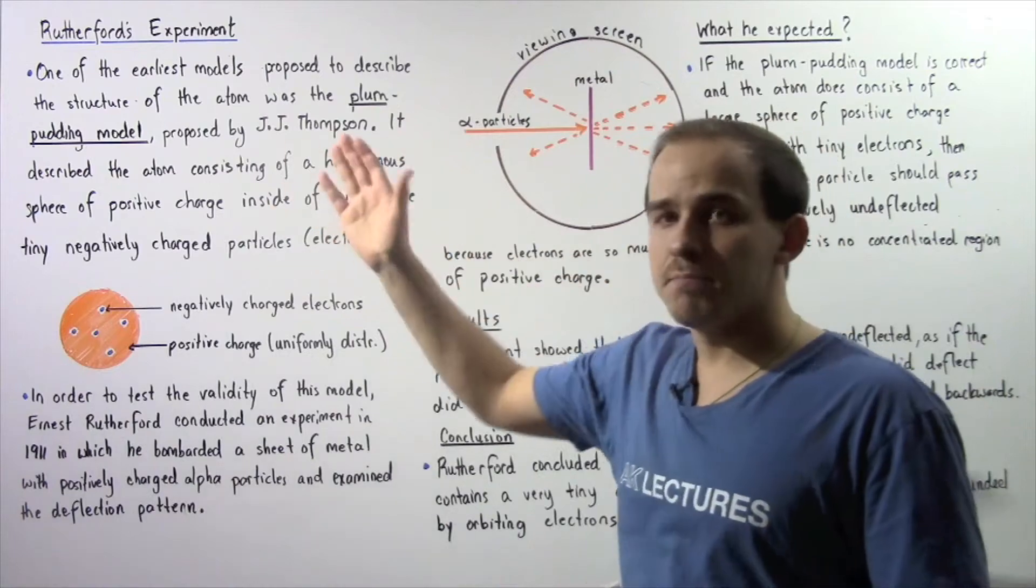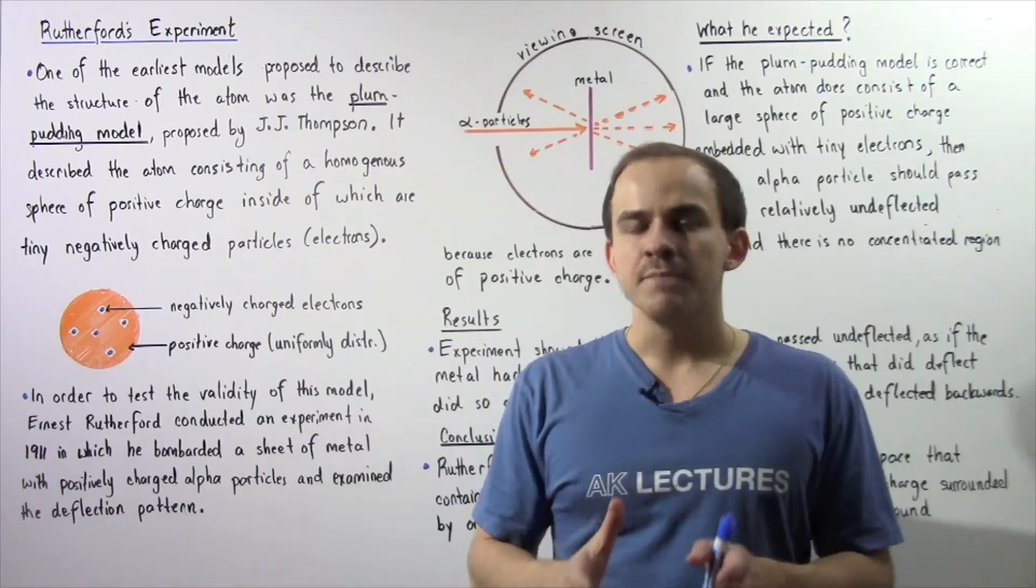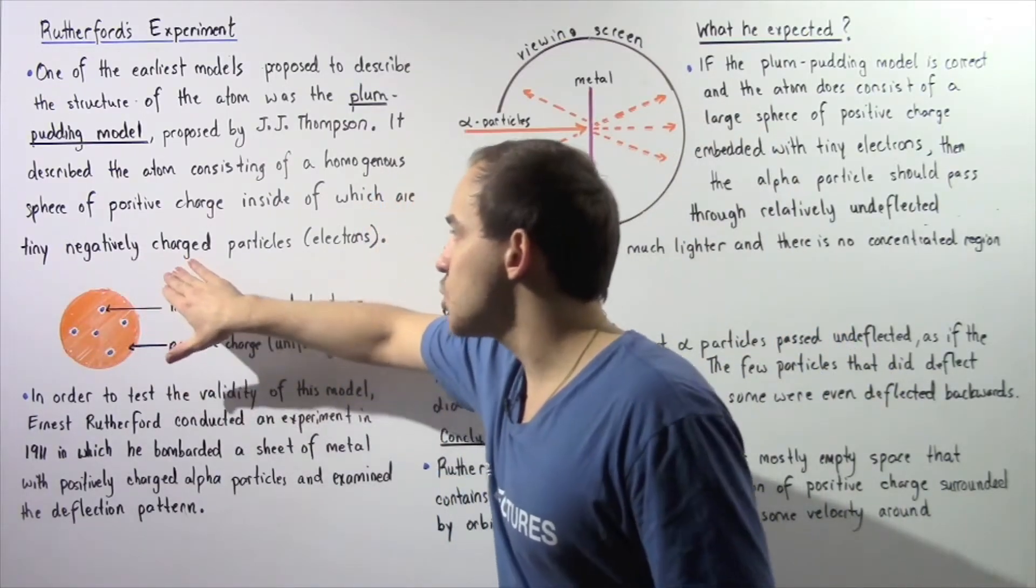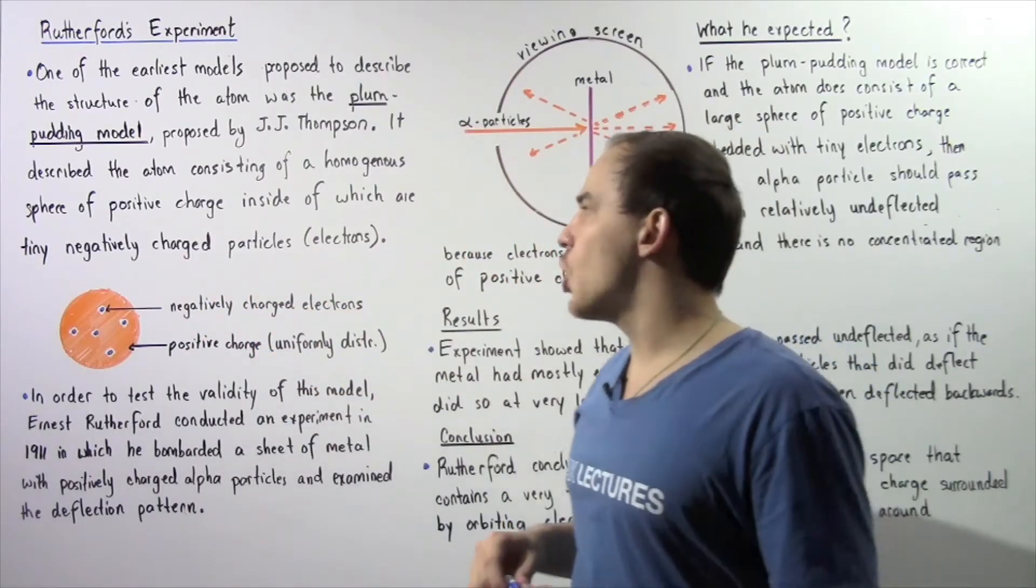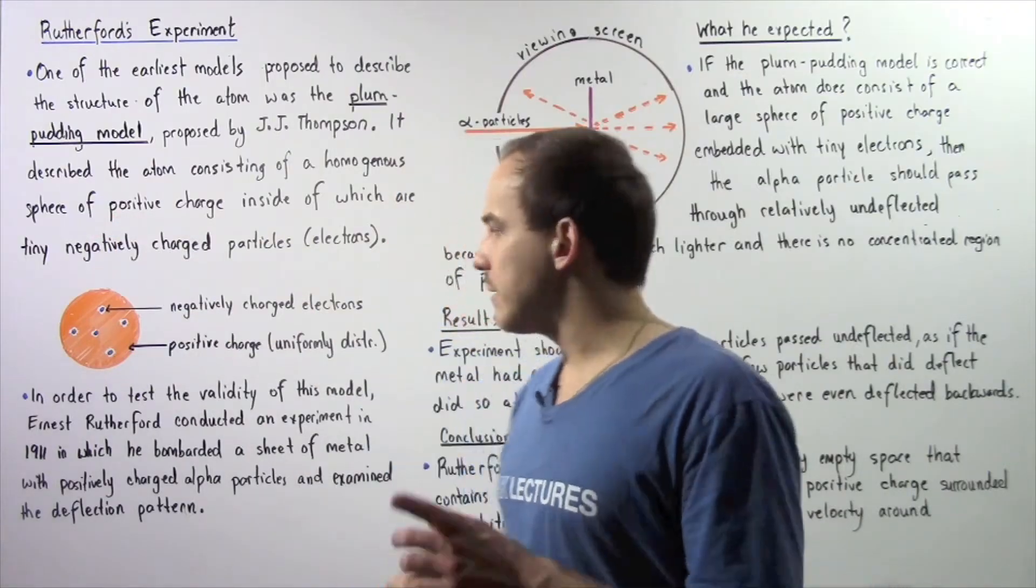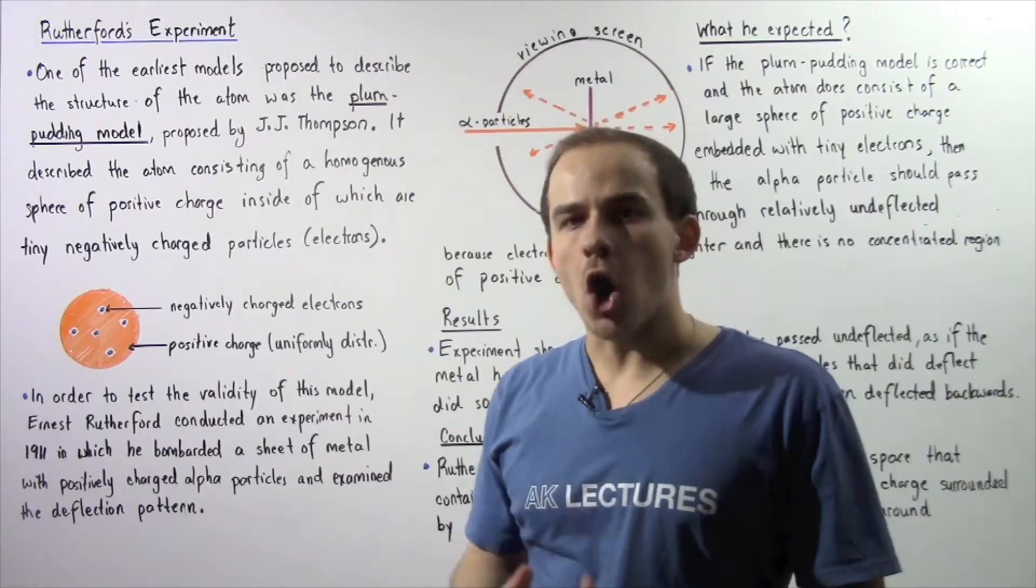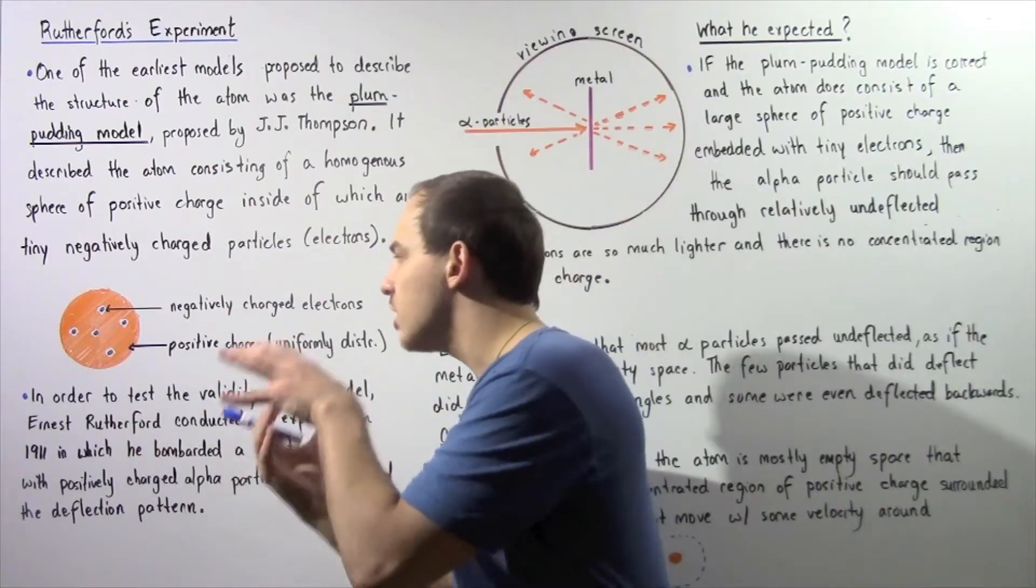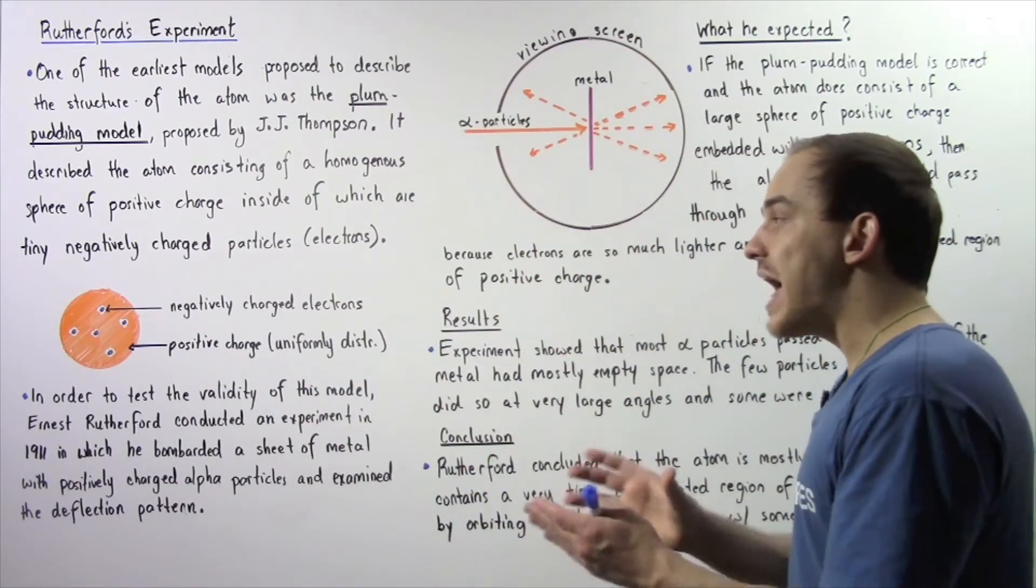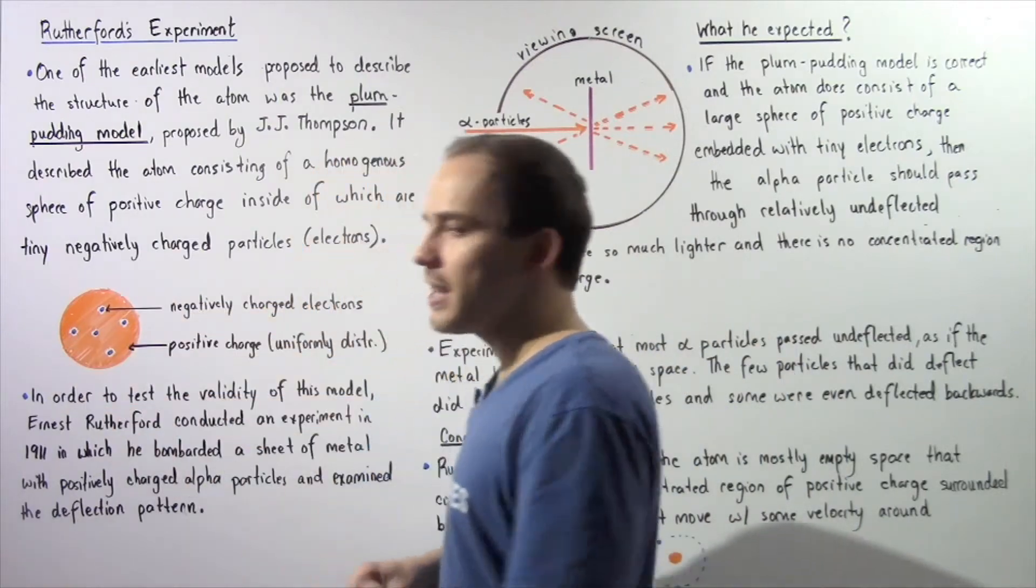This model basically described the atom consisting of a homogenous sphere of positive charge in which we have tiny negatively charged particles known as electrons. This is described by the following diagram. We have negatively charged electrons embedded inside a relatively large positive sphere that has a positive charge uniformly distributed throughout the entire sphere.